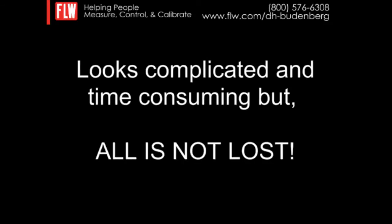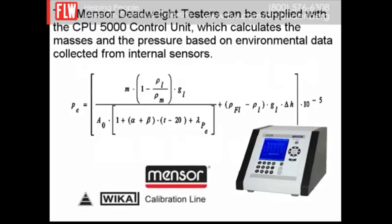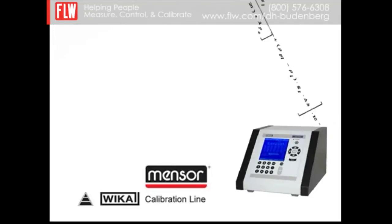Sensing and making adjustments to these environmental conditions can be done manually, but it's a little bit complex. With Mensor's CPB5000 supplied with a CPU control unit, the process is automated. When ordered as a set,